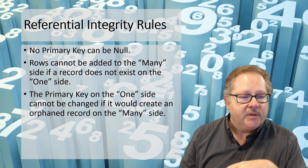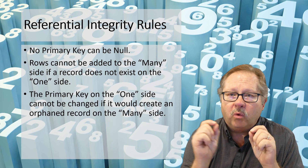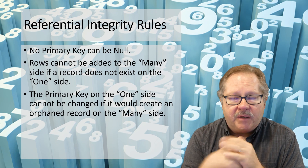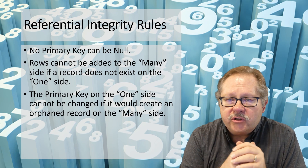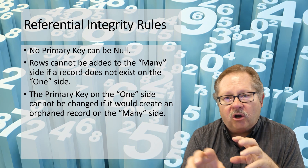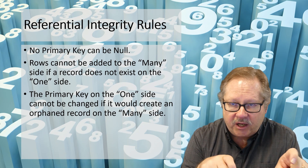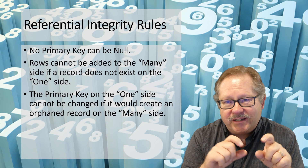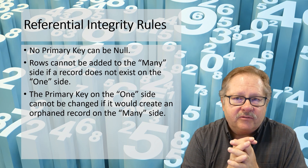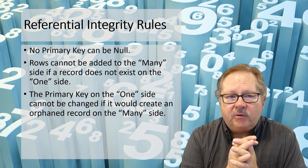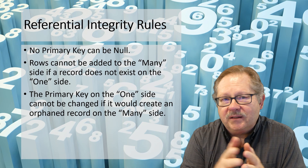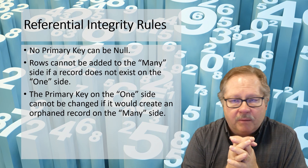The next item: the primary key on the one side can't be changed if it creates an orphan record on the many side. You can't change your primary keys unless the records on the many side also reflect that change or are pointing to a different detail record. This is probably not something you'll do very often — it would typically be an administrator performing a backend operation, which would not be all that likely.